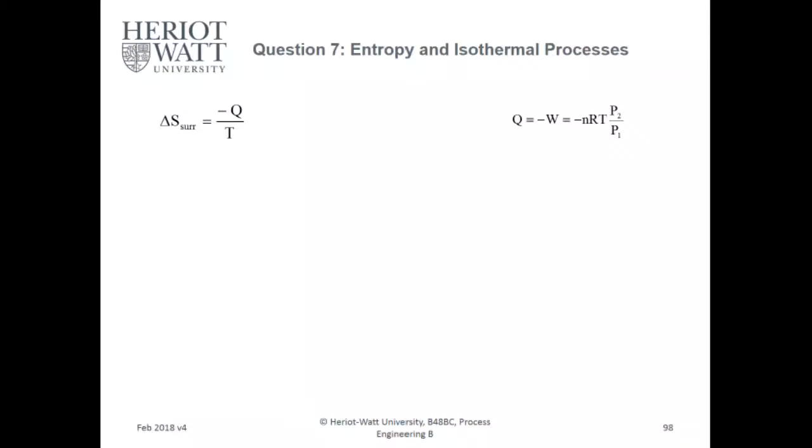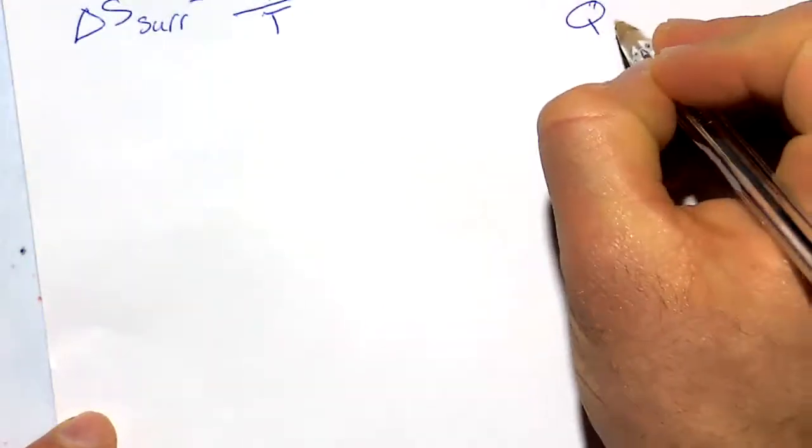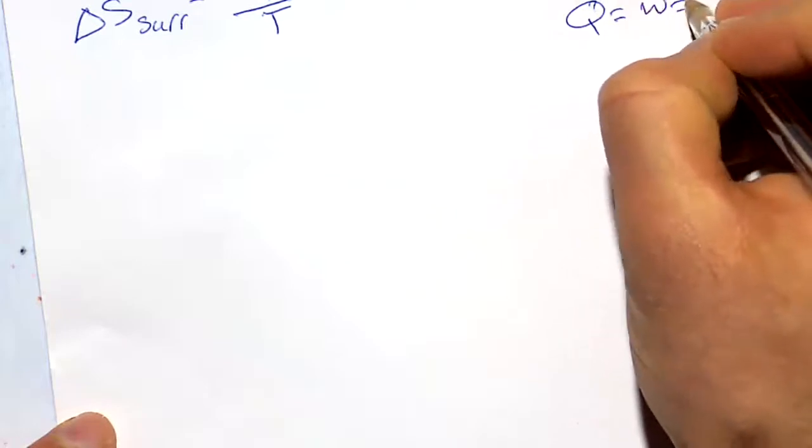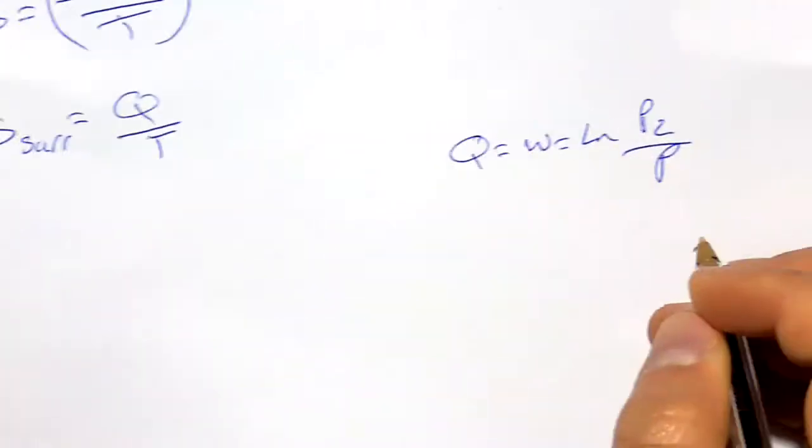Now, if you follow that logic, then Q equals negative—I'm sorry—Q equals W equals nRT log of P2 over P1.